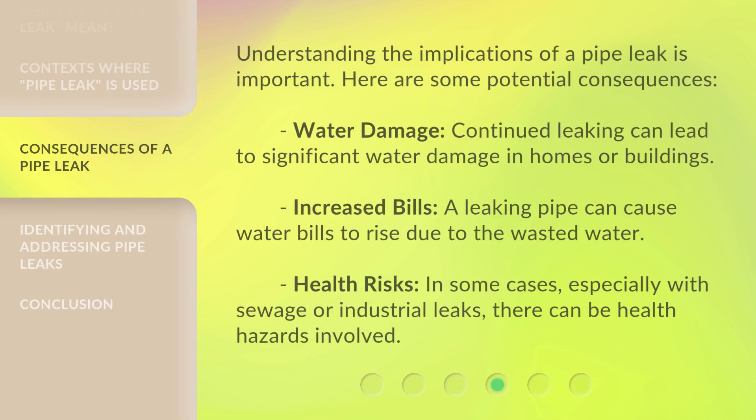Understanding the implications of a pipe leak is important. Here are some potential consequences. 4. Water Damage: Continued leaking can lead to significant water damage in homes or buildings. 5. Increased Bills: A leaking pipe can cause water bills to rise due to the wasted water. 6. Health Risks: In some cases, especially with sewage or industrial leaks, there can be health hazards involved.